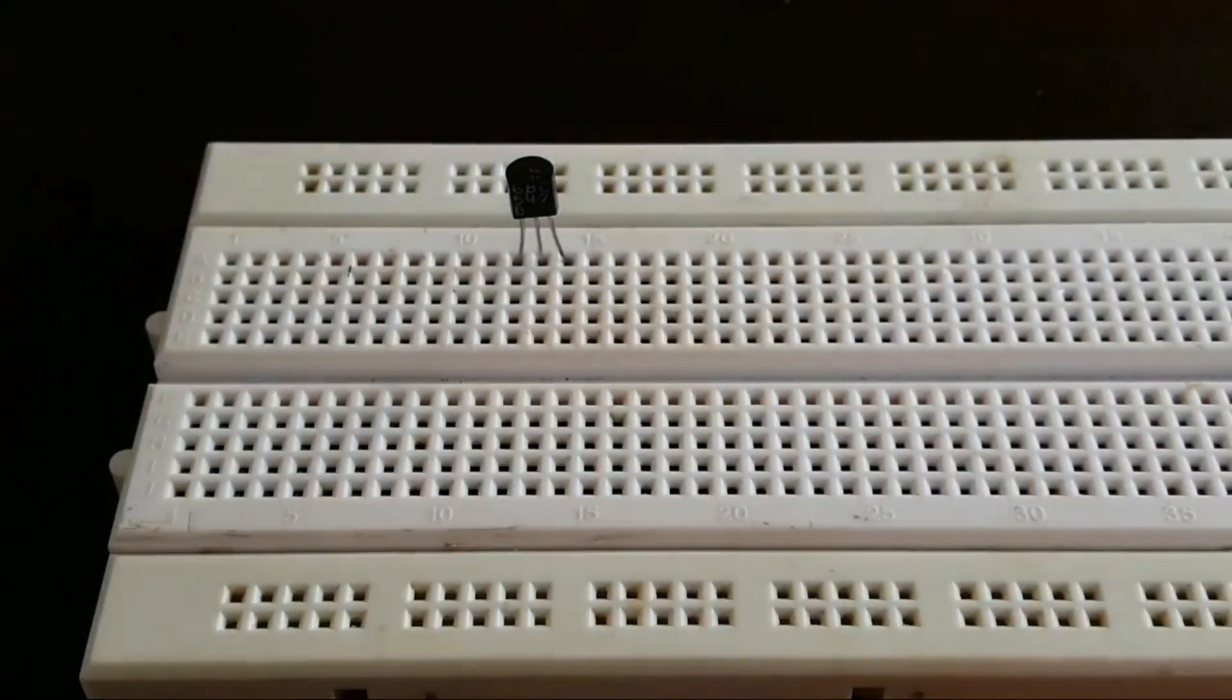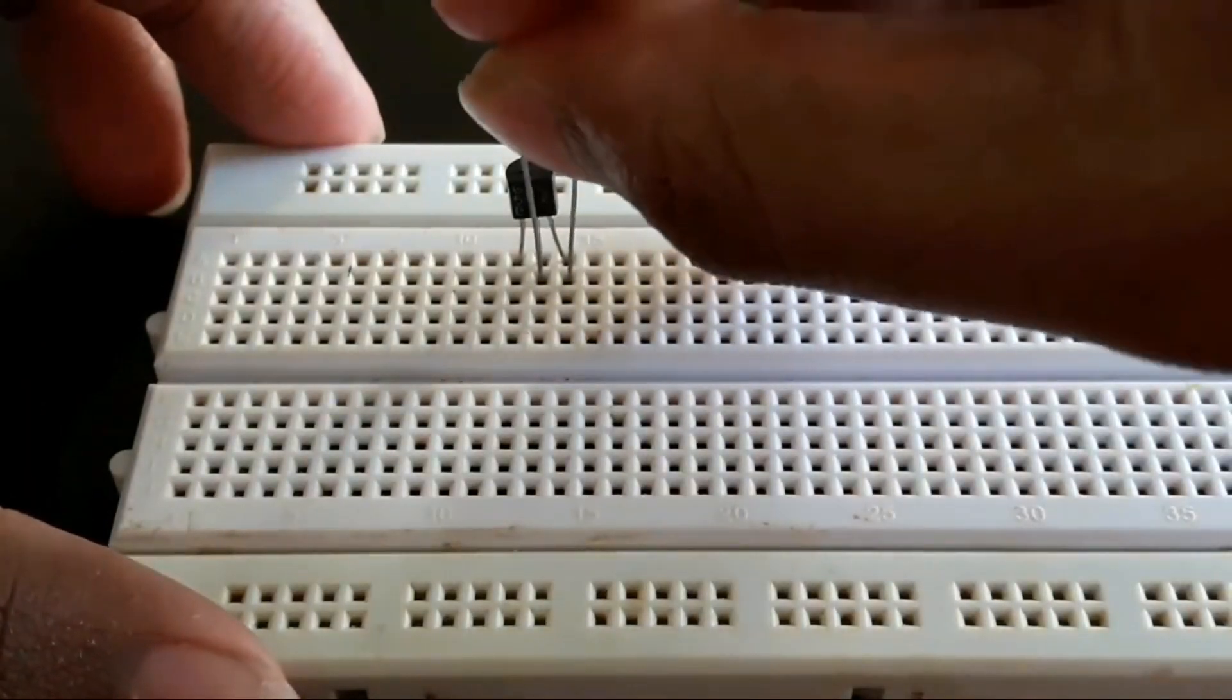Connect the two pins of the LDR from the base and emitter of the BC-507 transistor.